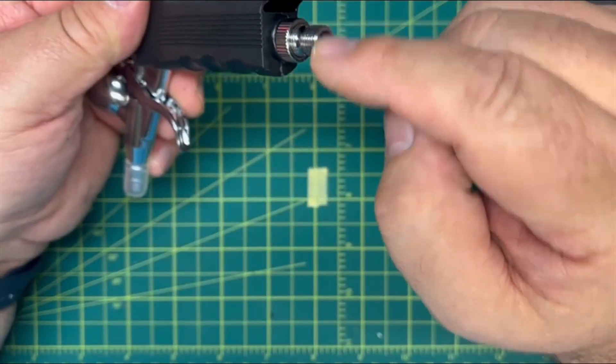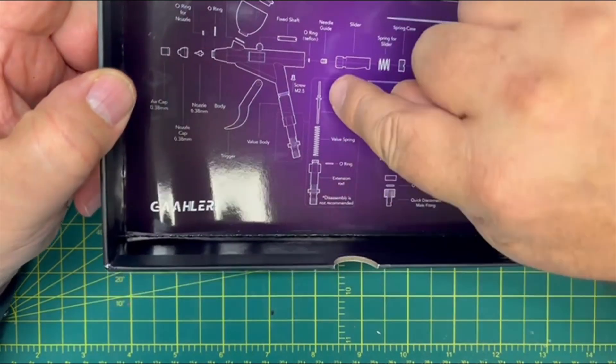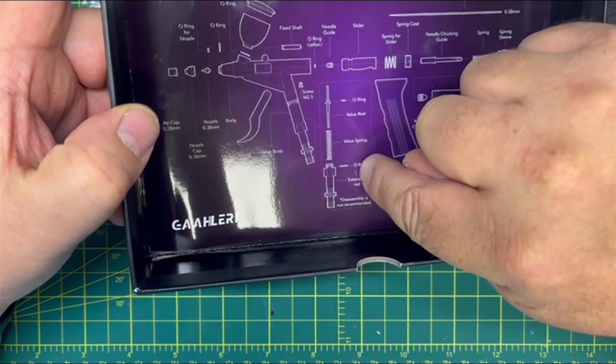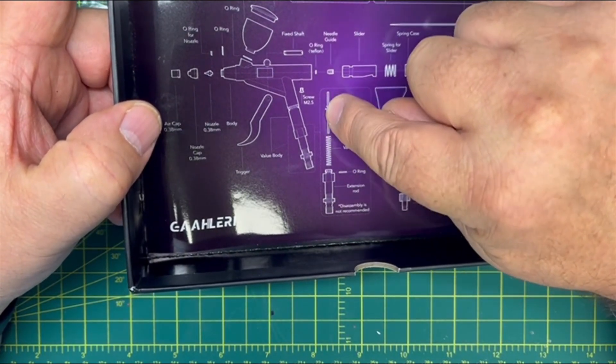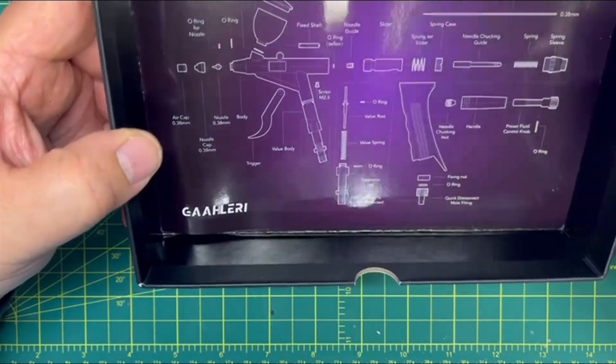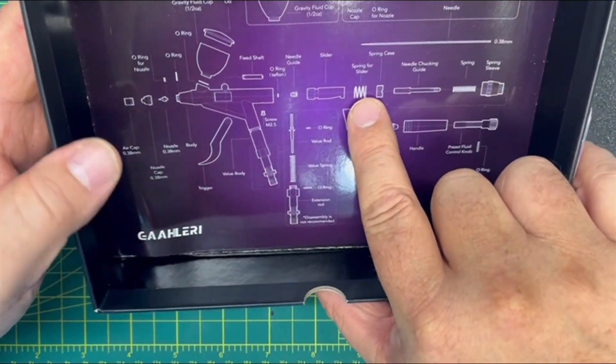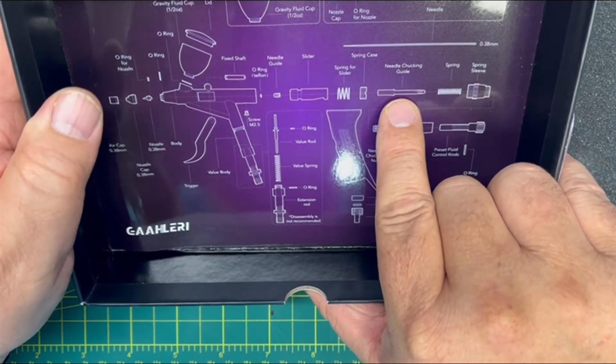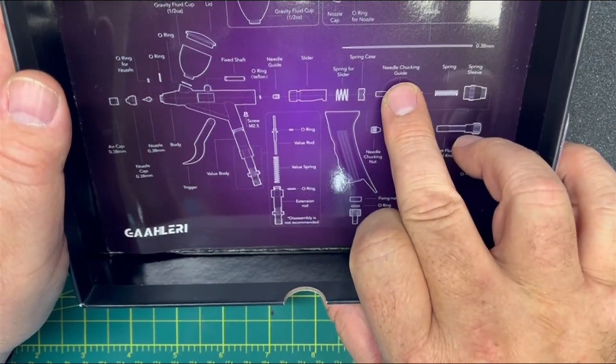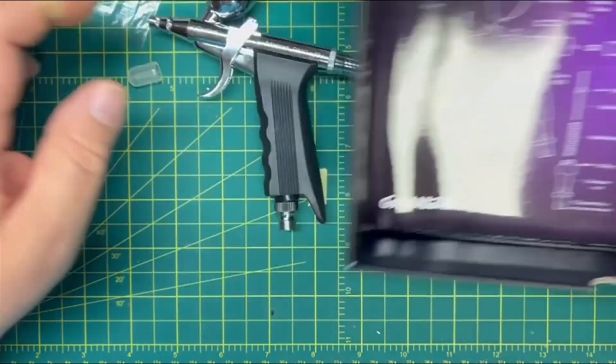You have your air valve hookup, goes all the way up through. I'm looking at again the exploded drawing in here. This is a lot different than anything that I am used to. Here's your o-rings—there's two of them. One for your valve itself and one down here below to seal. Other than that, this is all basically the same. You got your spring, your spring case, your needle. They call it the needle chucking guide, your spring for that, and then your spring sleeve.